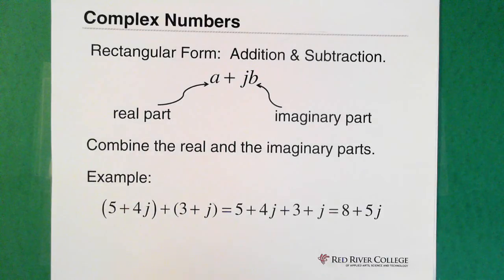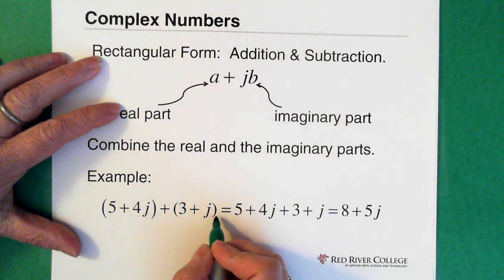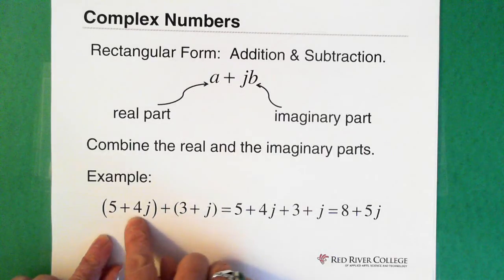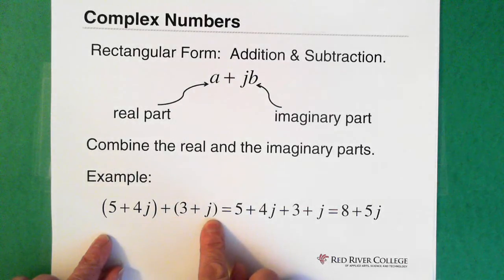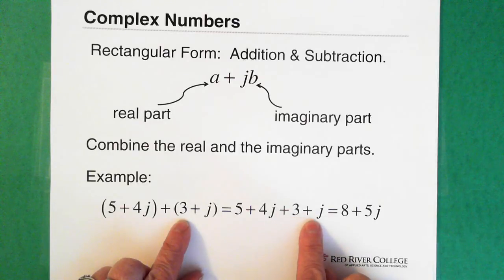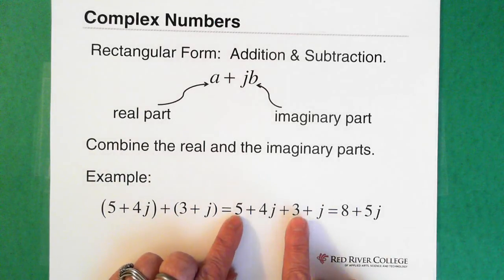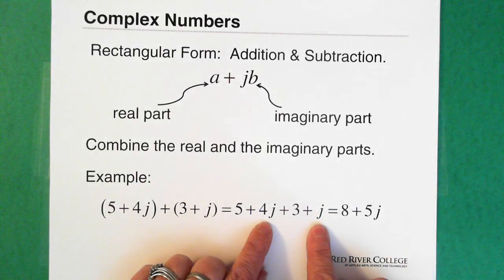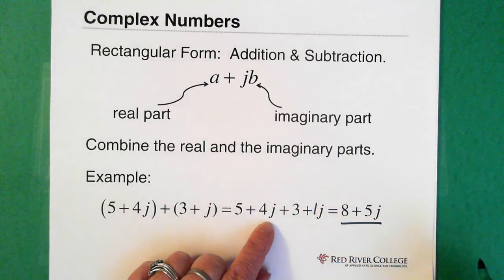So here's an example. We have 5 plus 4j added to 3 plus j. These are our real parts, which we add. Because we have a plus in front, we can just drop both brackets. So we end up with 5 plus 4j added to 3 plus j. We add our real numbers — the 5 and the 3 — to get 8. And we add our imaginary numbers, the 4j and the 1j, which gives us 8 plus 5j.